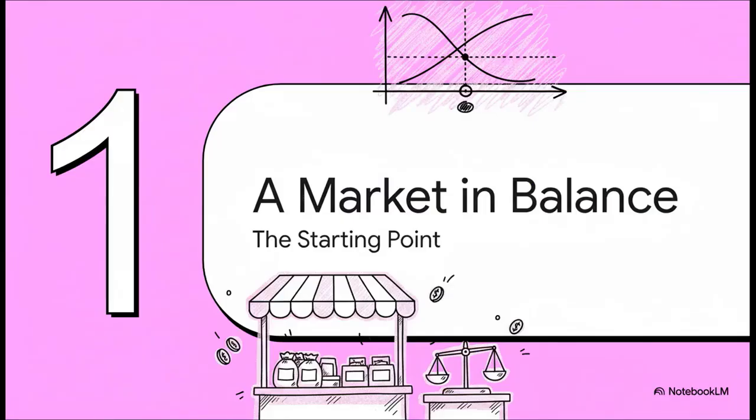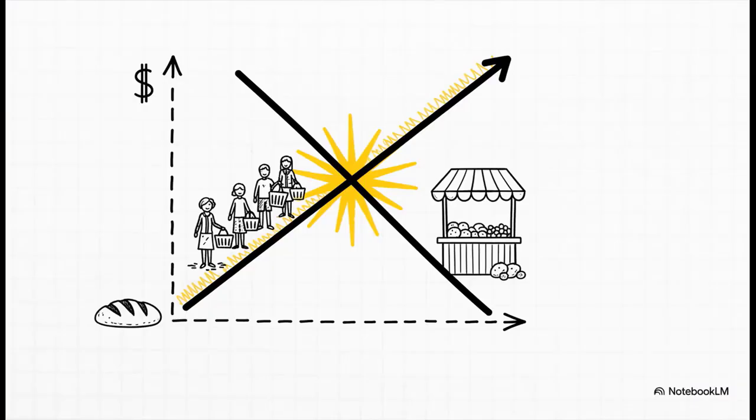Okay, so to really get what changes, we first need to see what a normal market looks like before anyone messes with it. We need a before picture. All right, so here's your classic setup. You've got the supply curve, that's how much companies are willing to sell, and the demand curve, that's how much we all want to buy. Where those two lines cross, that's the sweet spot. We call it equilibrium. It's the price and quantity that the market just naturally agrees on.